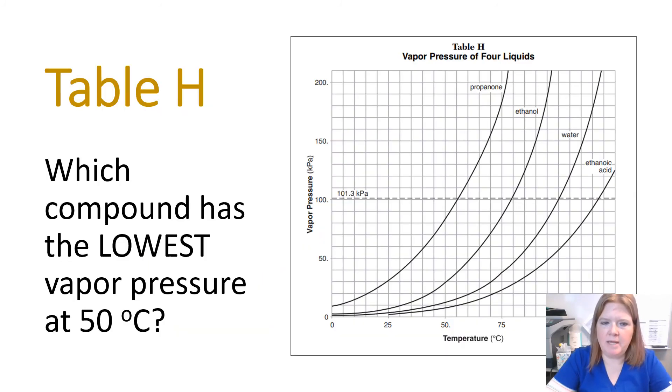So which compound has the lowest vapor pressure at 50 degrees Celsius? So we go from 50 degrees Celsius, go up. Well, you can see that's obviously ethanoic acid that has the lowest.